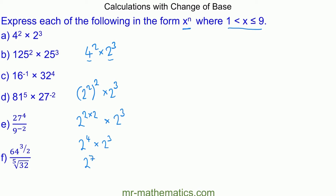For question b, we have 125 squared times 25 cubed. We can write 125 and 25 using the same base of 5. So 125 becomes 5 cubed, raised to the power of 2. Using the power rule, this gives 5 to the power of 3 times 2, which is 5 to the power of 6.